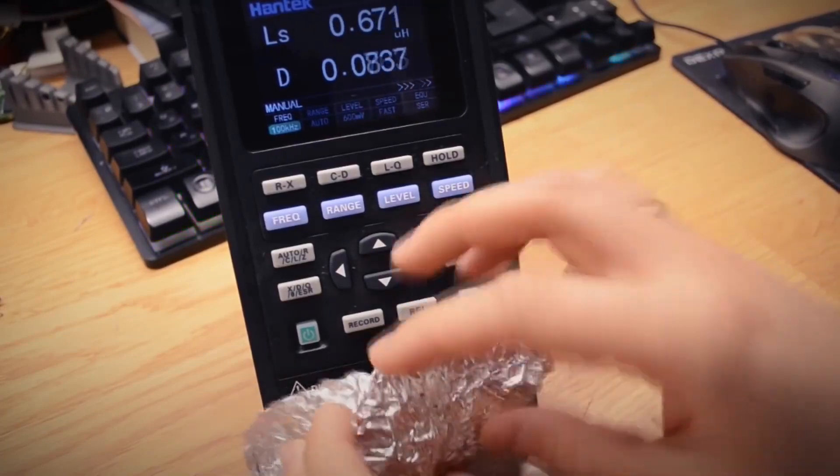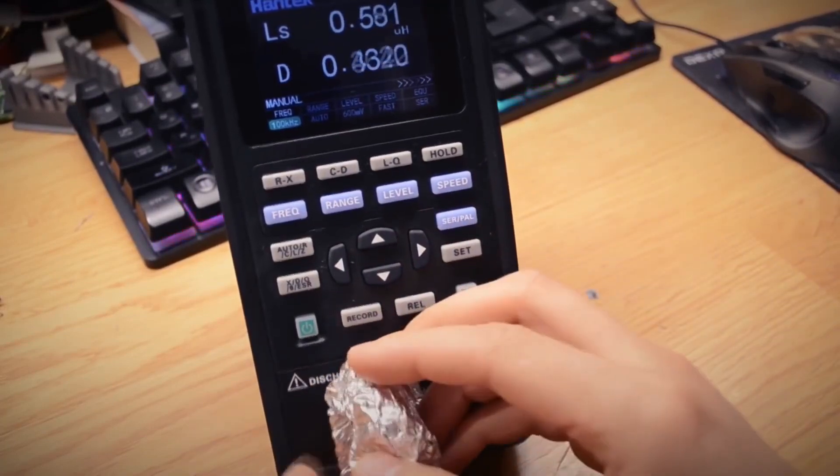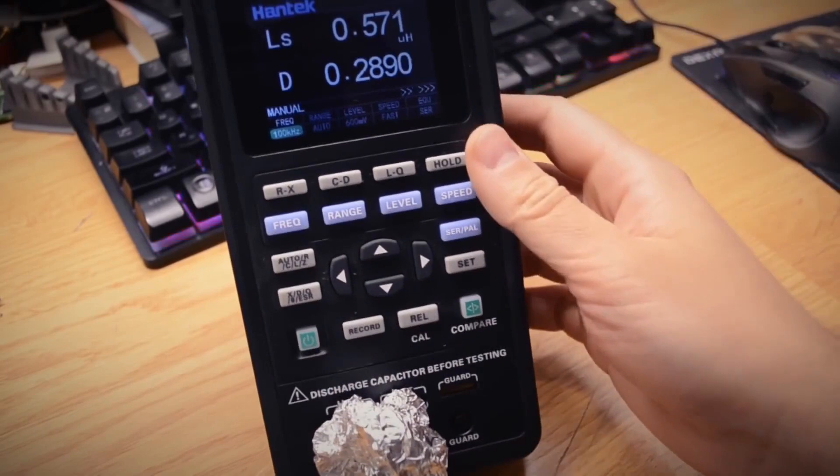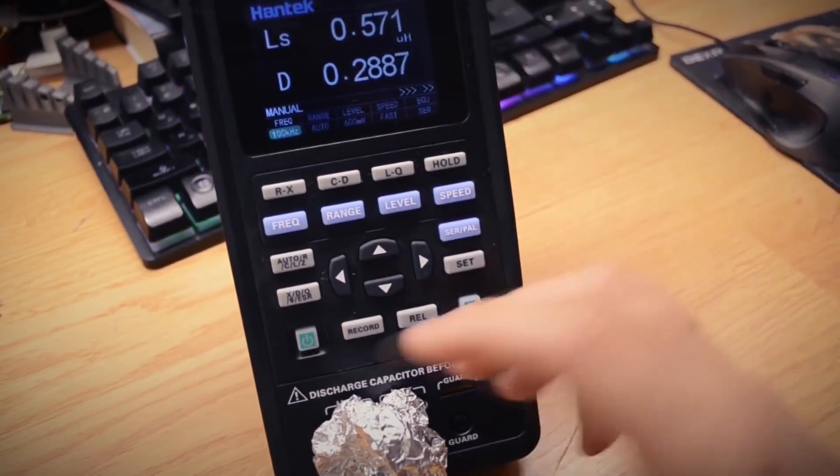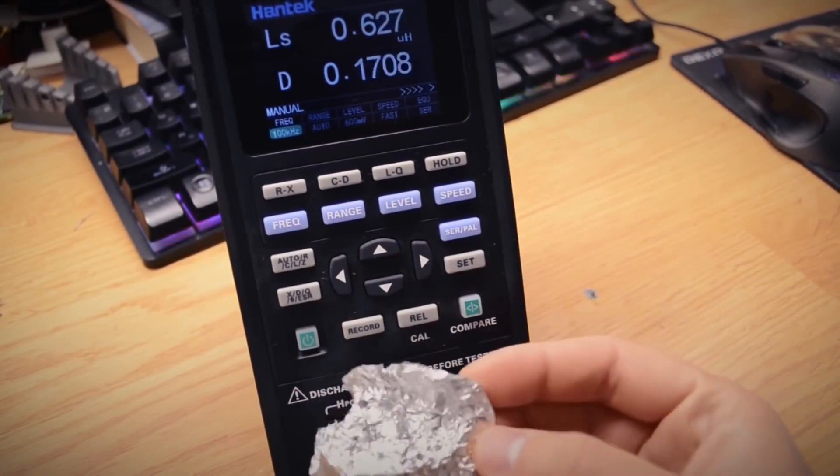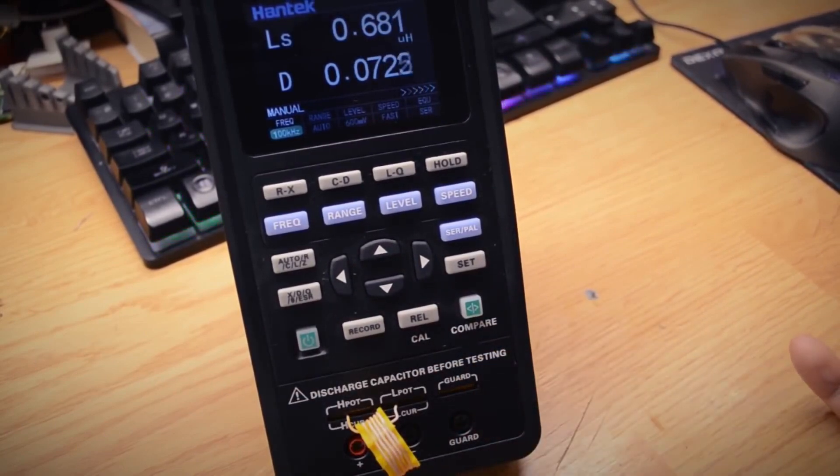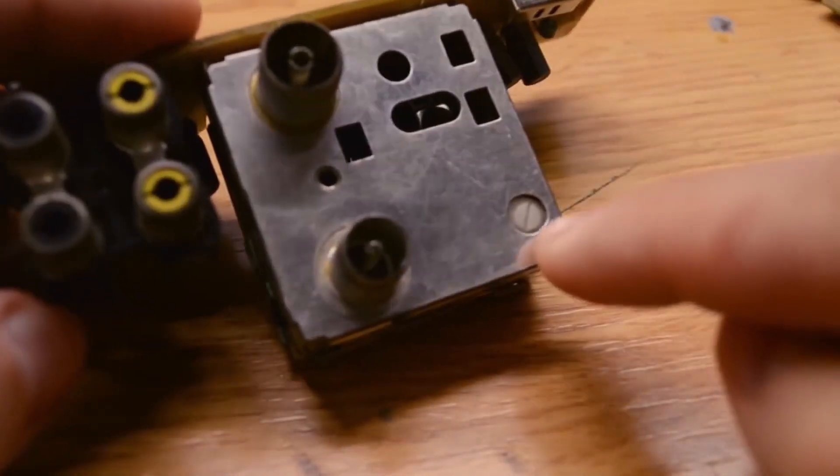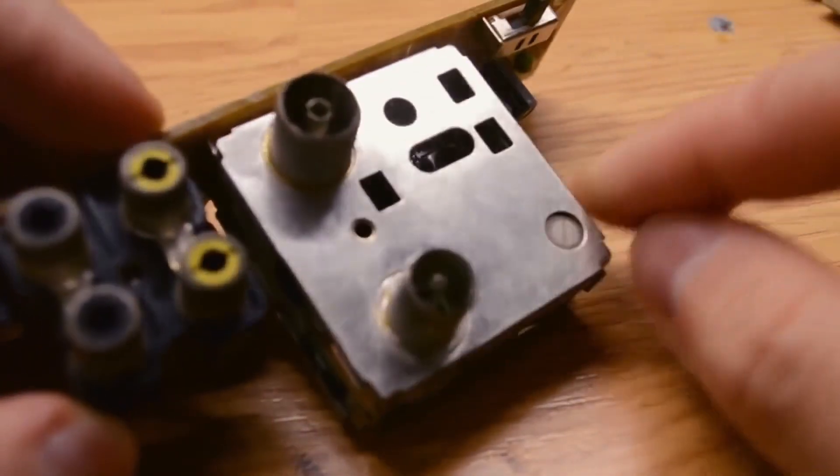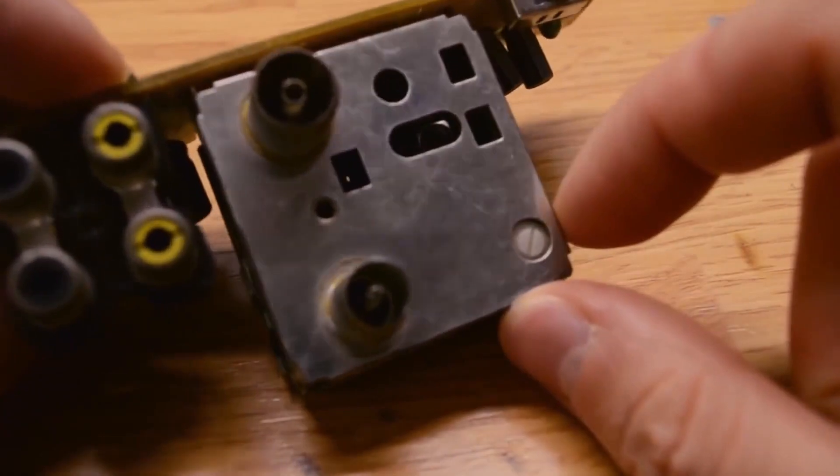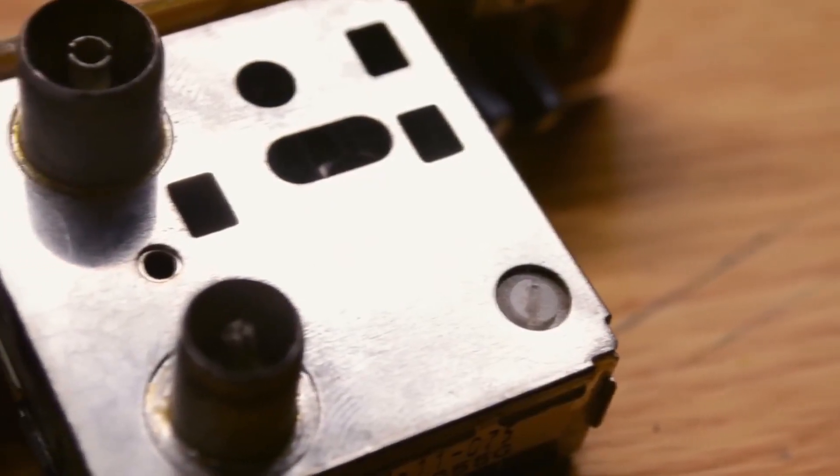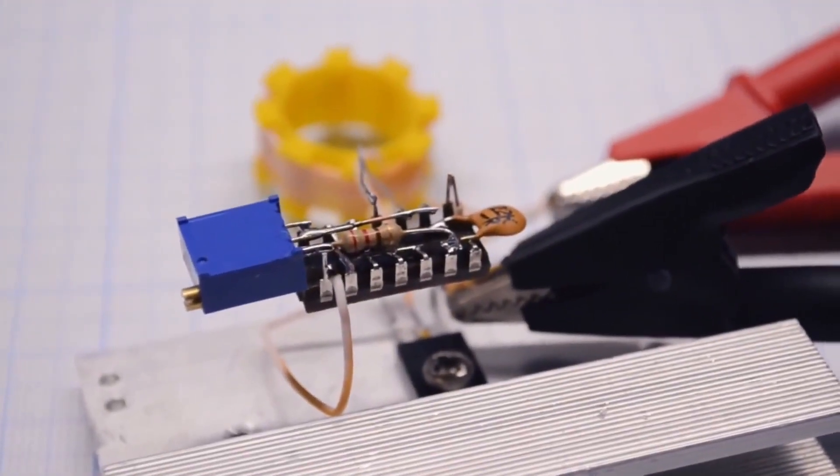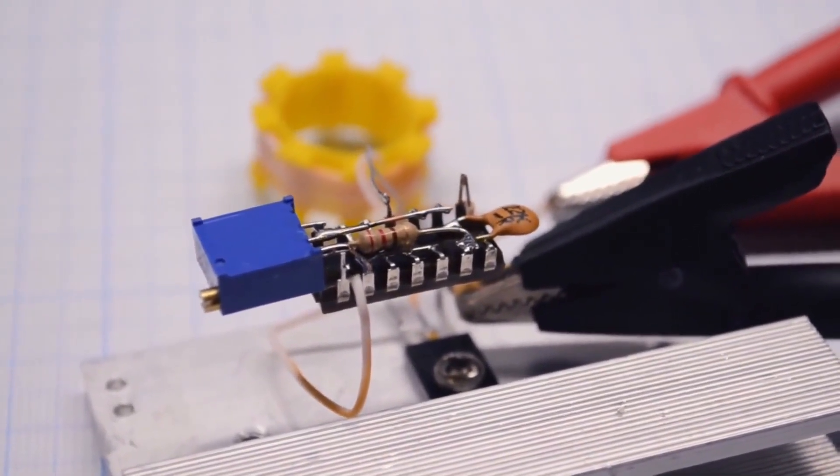And the last interesting point I wanted to demonstrate to you is the effect of the shield on the inductance value. Look, we take an inductor and wrap it in foil. We see how the inductance value decreases. Therefore, when designing filters, it's important to consider whether the device will have a metal casing. If this point is not taken into account, the frequency characteristics of the filter may shift due to the shielding casing. That's why in various high-frequency units, the adjustment screws for tuning are positioned so that they can be turned outside the shield. Because if everything is adjusted, and then the shield is put on, all the tuning will be thrown off.